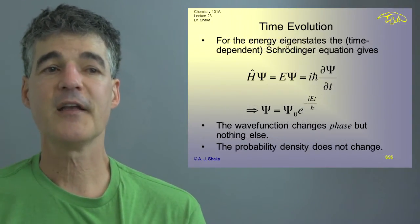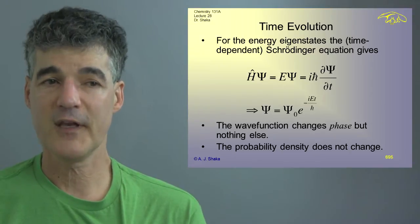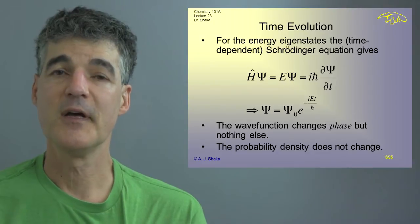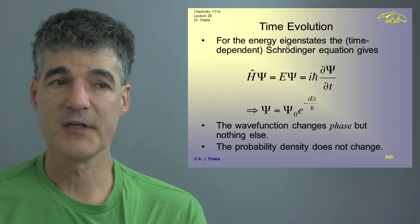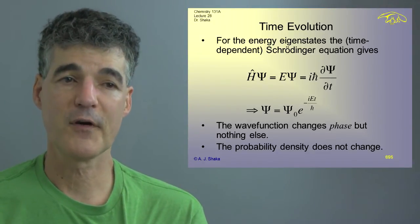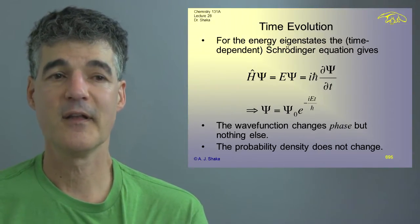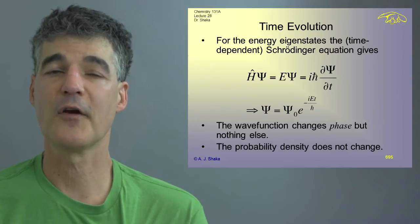And for the energy eigenstates, we can solve the equation exactly and we find that we just get a complex exponential times whatever the probability distribution is at time zero. So the wave function changes phase, as I said, and nothing else. And you should think of that as changing color.